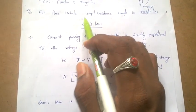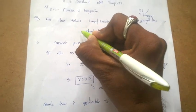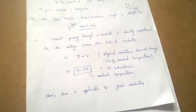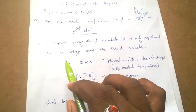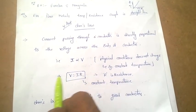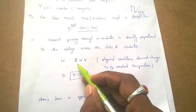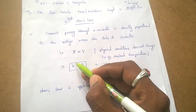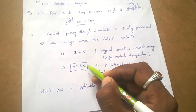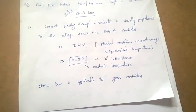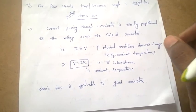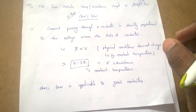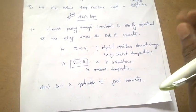The next topic is Ohm's law. Ohm's law states that at constant temperature, the current passing through a conductor is directly proportional to the voltage. The simplified form of Ohm's law is V equal to I into R. Ohm's law is applicable to good conductors. The main important bit: Ohm's law does not apply to — what does it not apply to?